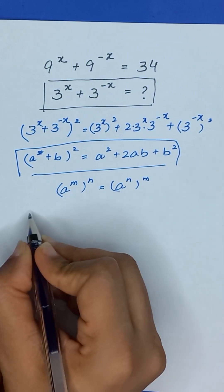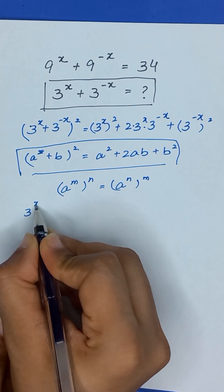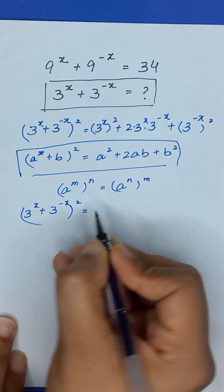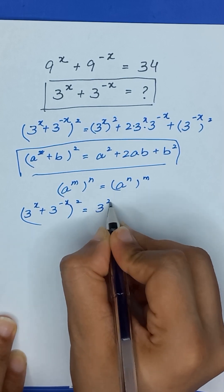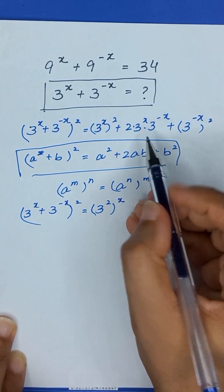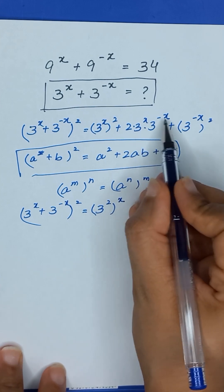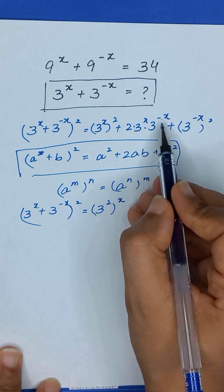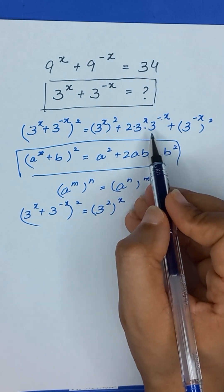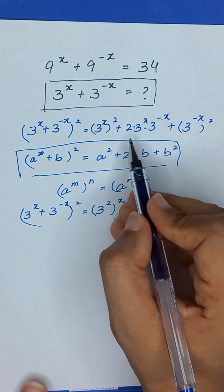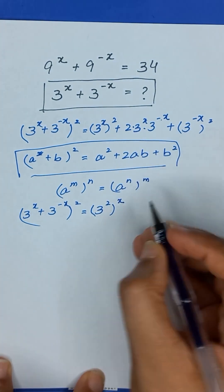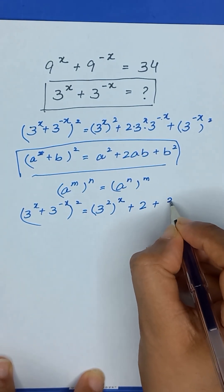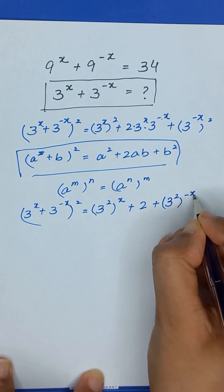So 3 to the power x plus 3 to the power minus x, squared, will be equal to 3 squared to the power x. For the middle term, we have 3 to the power x minus x — since the bases are the same, we add the powers, so x minus x equals 0, and 3 to the power 0 equals 1. So we have 2 times 1, which is 2, plus 3 squared to the power x plus 3 squared to the power minus x.